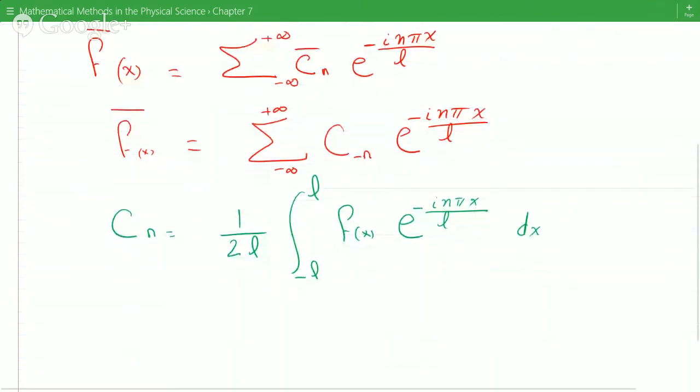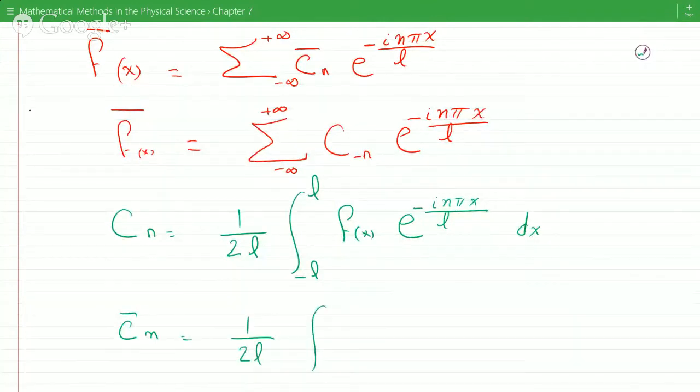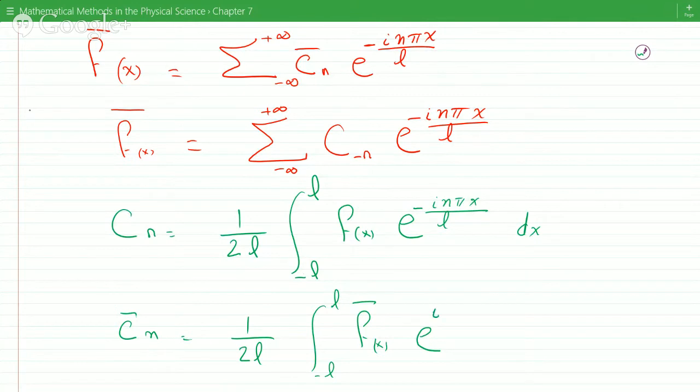So now if I take the complex conjugate of that, that would be 1 over 2L from minus L to L, the complex conjugate of F of x. And now I take the complex conjugate of the exponential, which is i n pi x over L, dx.